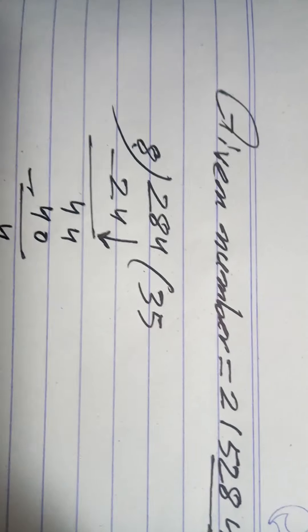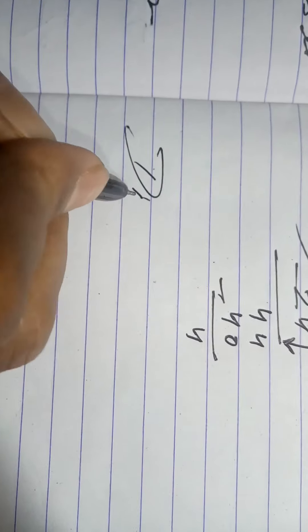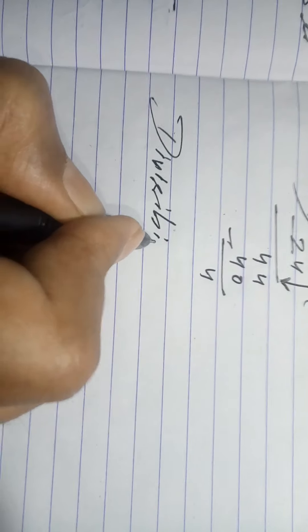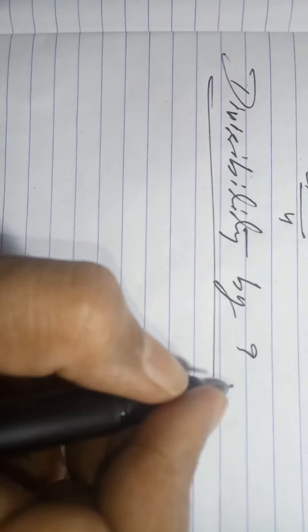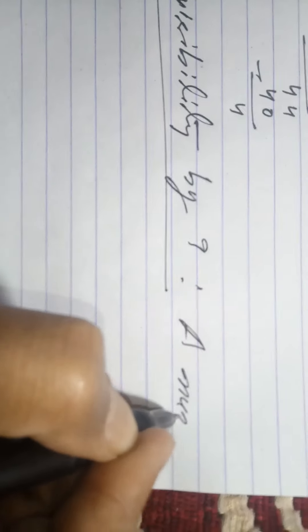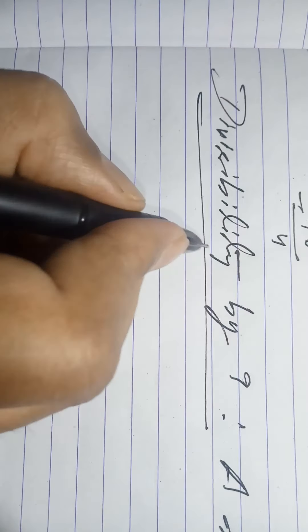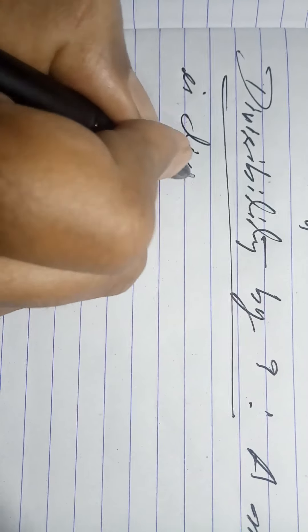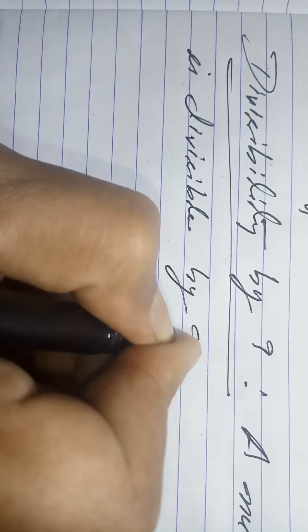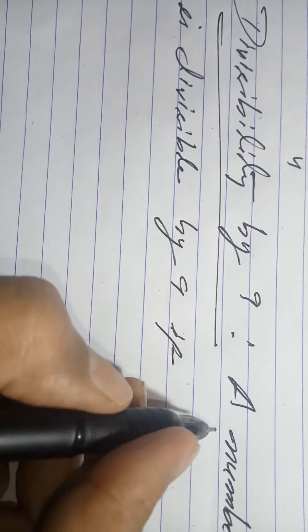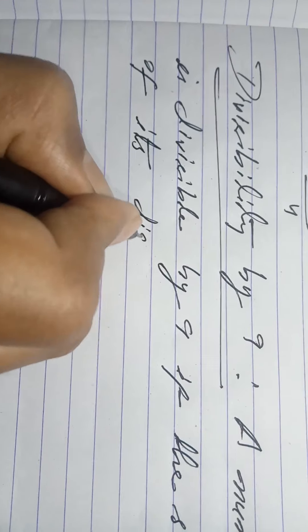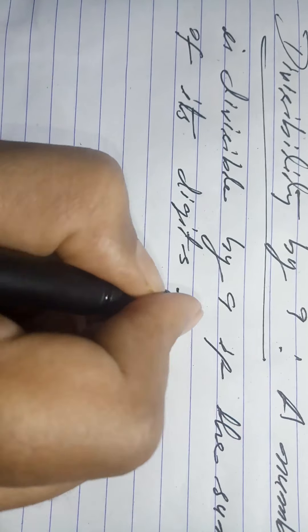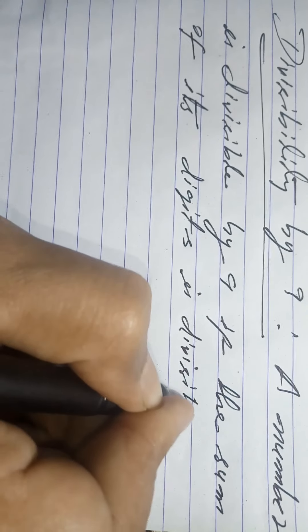Divisibility test by 9. A number is divisible by 9 if the sum of its digits is divisible by 9.